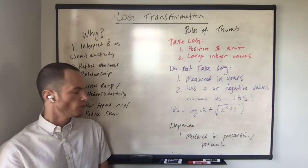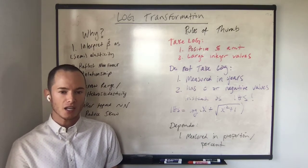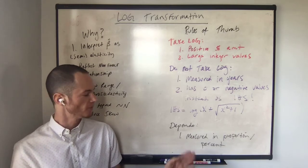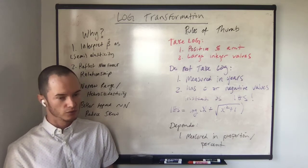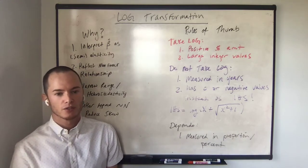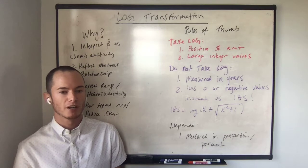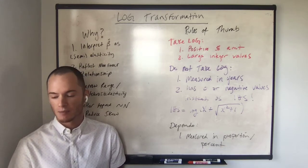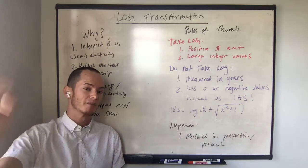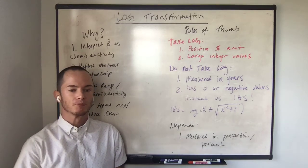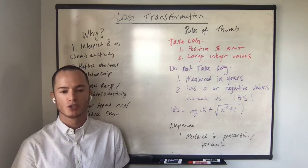Finally, for variables measured in proportion or percent, it depends on the case. These variables already have a percentage point interpretation for their coefficients, so we have that criteria basically satisfied. So if there's some kind of nonlinear relationship or some heteroskedasticity, you may want to take the log. For example, if you're looking at something like an exchange rate, which fluctuates a lot, you may want to take the log. But otherwise, variables measured in proportion or percent are typically left in their original form.